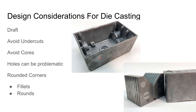Rounded corners are preferred in almost any type of casting — metal doesn't like to make sharp corners. Adding fillets and rounds is generally good practice. A sharp cast corner creates a stress concentration, raising stresses in that area and making the part more likely to crack.